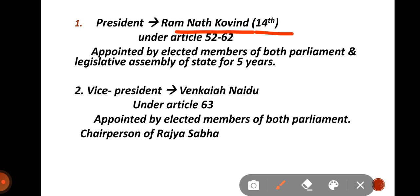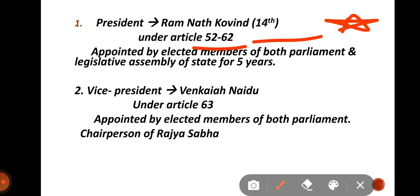Rules and regulations about the President — all Articles 52 to 62 cover this. Articles 52 to 62 are important; you have to remember some of those articles. The President is the head of Parliament and the legislative assembly, and members are elected for five years.